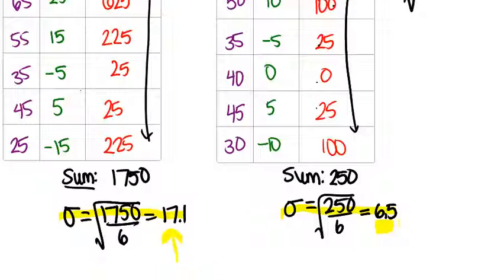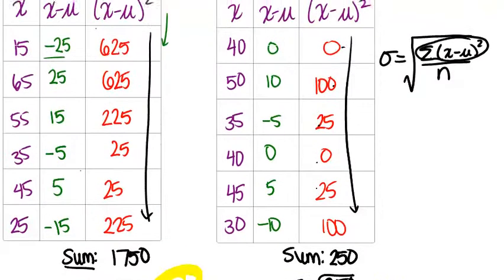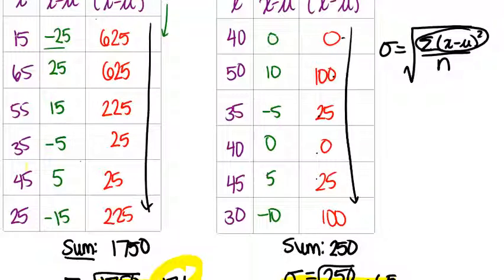So the original question asked which brand had more variable data, and that's definitely Brand A, because the standard deviation is much bigger than for Brand B. And remember that's what standard deviation tells you. It tells you how spread out is the data. So a larger number for standard deviation means that the x values we had originally were much more spread out or varied for Brand A than for Brand B.